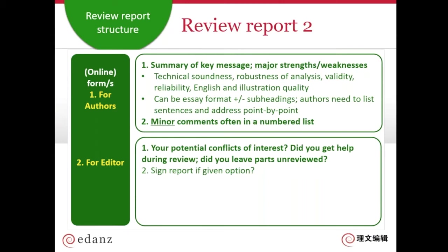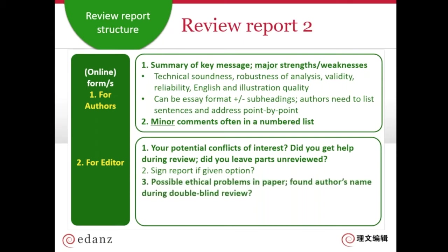You might have the option to sign the report and make your name known to the author, other reviewers, or even the public — even if the journal uses a single or double-blind review system where the author shouldn't know the reviewer's name. You might choose to make yourself known anyway. If you discovered or suspect an ethical problem, this is the place to write it. Also, if the journal uses double-blind review but you found the author's name inside the paper, you can state in this section that you know who the author is but don't know them in real life, so you don't have a conflict of interest.